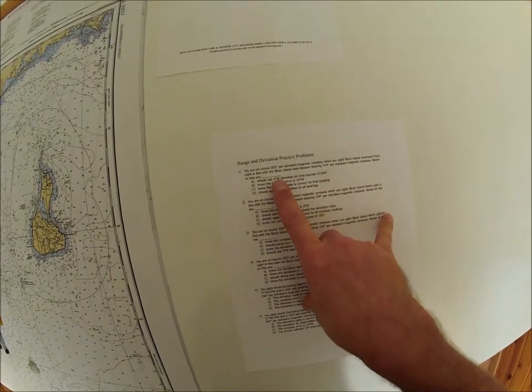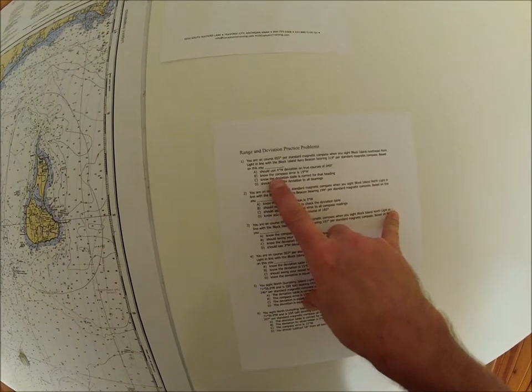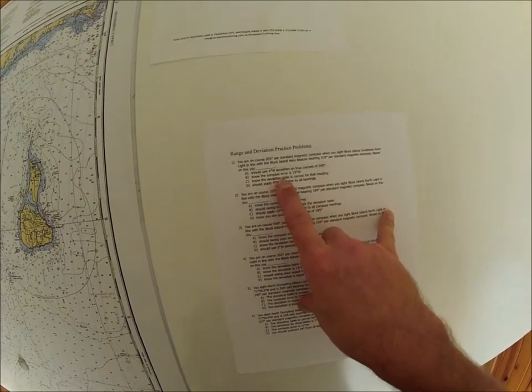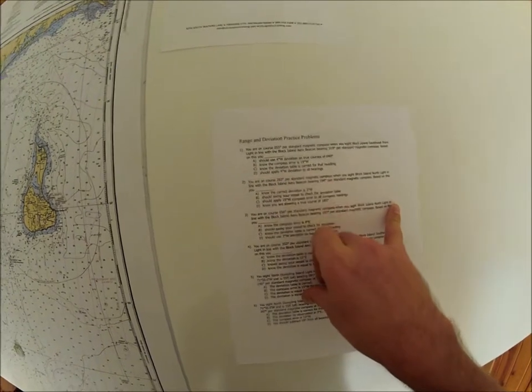Based on this, you should use 4 west deviation on true courses of 40. No, the compass error is 19 west. No, the deviation table is correct for that heading. Should apply 4 west deviation to all bearings.